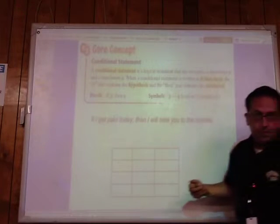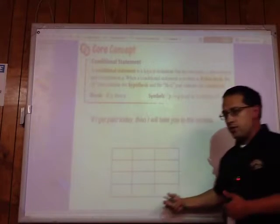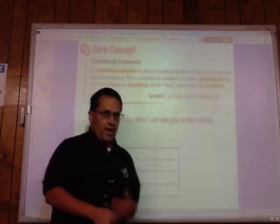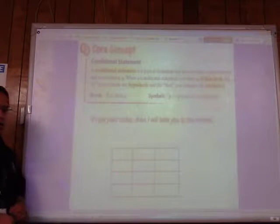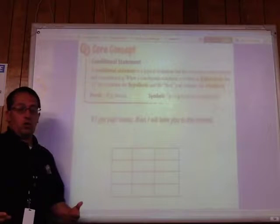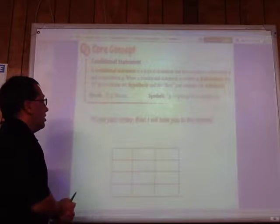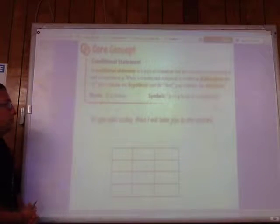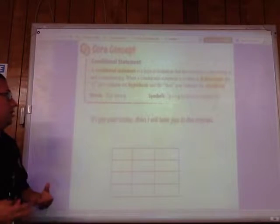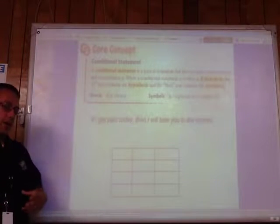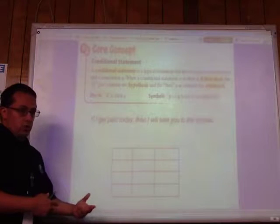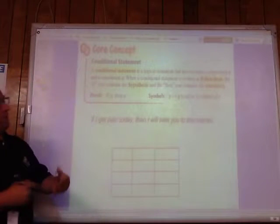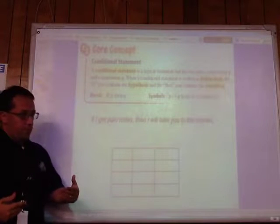What we're looking at here is logic — when are things true, when are things false, and if we know something, what can we conclude from that? This is going to get us into solving geometric proofs. To start off, we want to talk about conditional statements. A conditional statement is a statement that has two parts: a hypothesis and a conclusion.